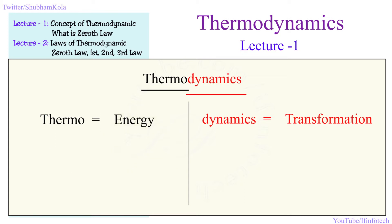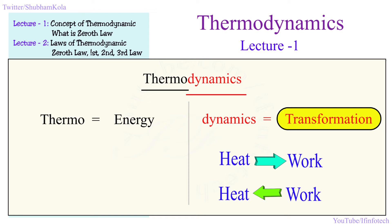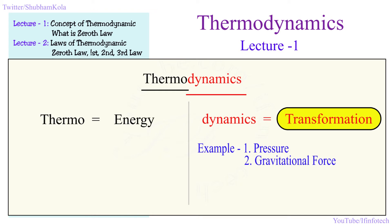Now, what is the meaning of dynamics? The meaning of dynamics here is transformation. Transformation means, for example, heat goes into work and work goes into heat. Dynamics is that part which makes energy flow. For example, pressure is a type of input due to which fluid flows, so pressure is dynamics. Gravitational force is also dynamics — anything which makes energy flow is dynamics.